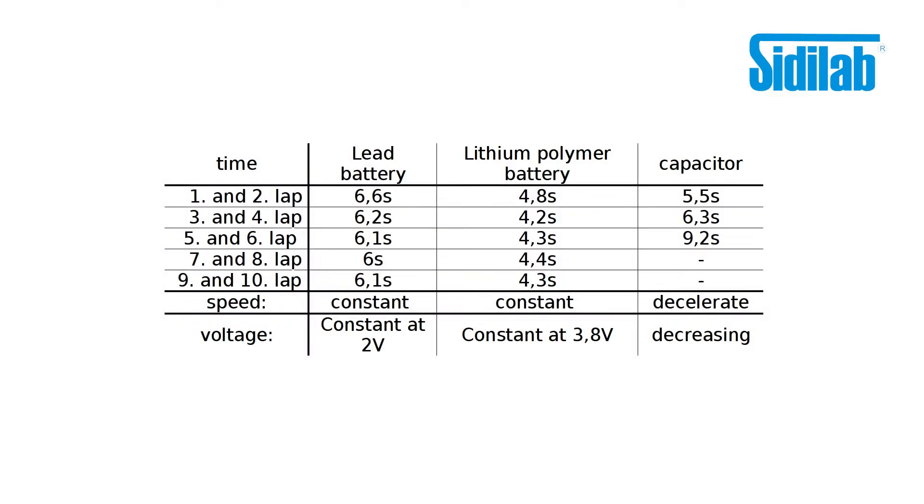In terms of voltage, this means that the batteries maintain their voltage constantly, whereas the capacitor applies a decreasing voltage and that the lead battery voltage, as measured, is less than the voltage of the lithium polymer battery.